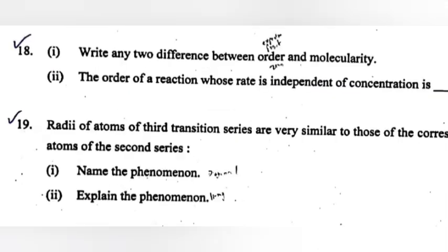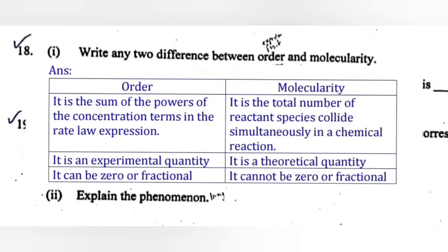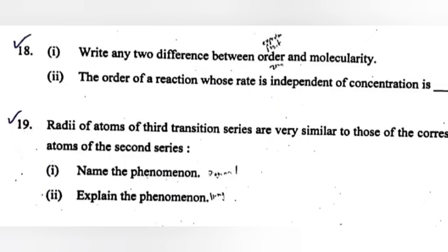Question 18, Part 1: Write any two differences between order and molecularity. Part 2: The order of reaction whose rate is independent of concentration is blank. Answer: Zero order.